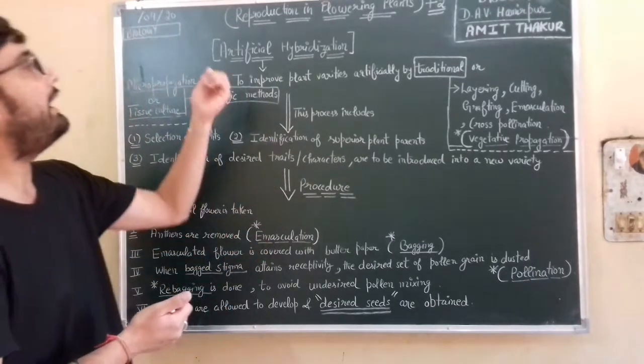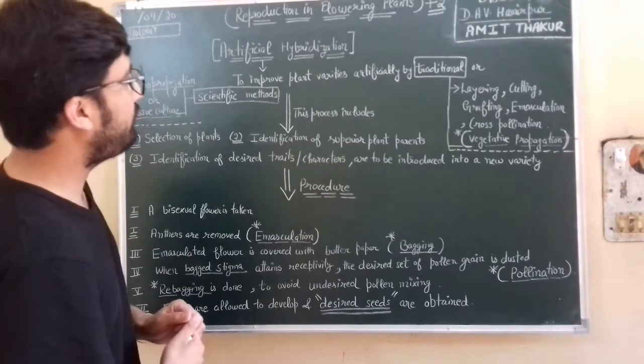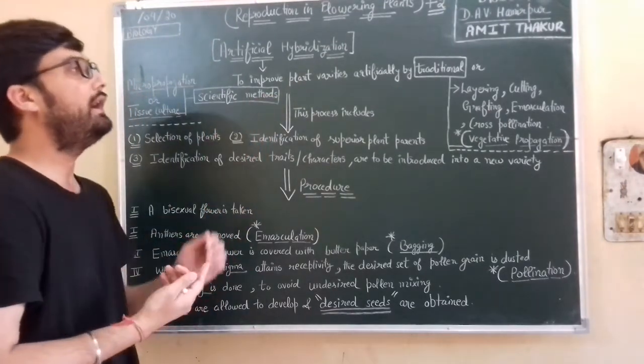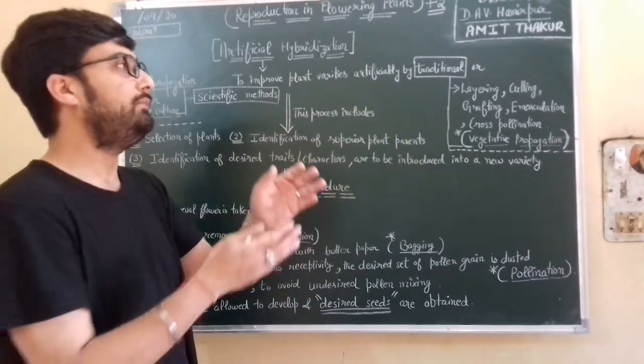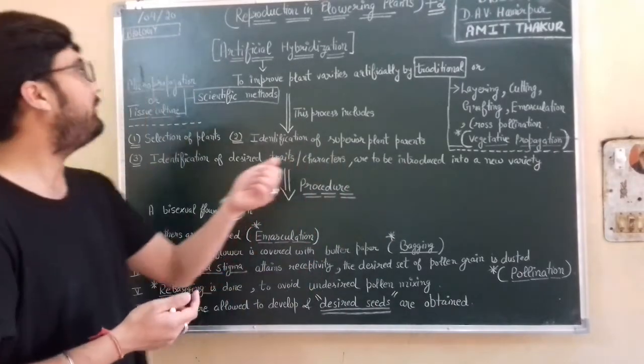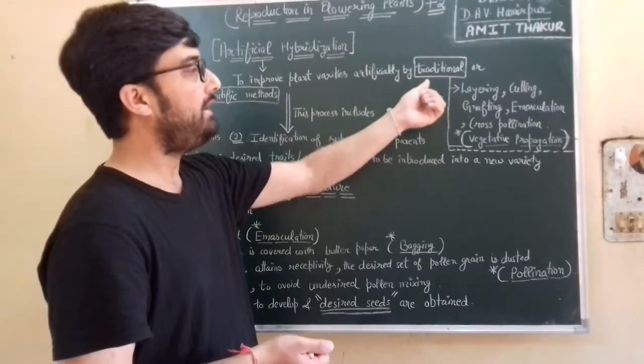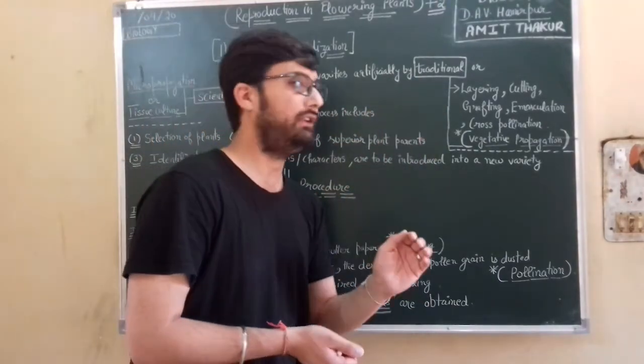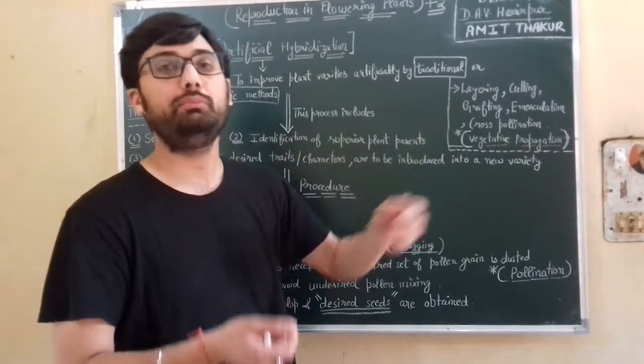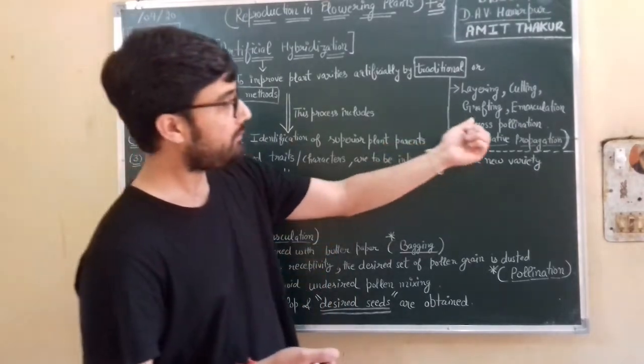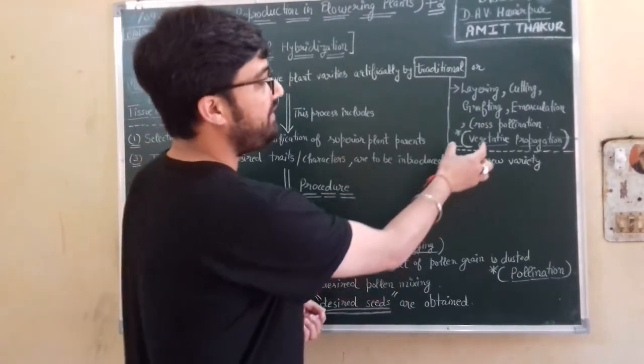So this is artificial hybridization and the motive of this process is to improve plant varieties artificially, or you can say by human efforts, either by traditional way or traditional methods or by scientific methods. When we talk of traditional methods, these methods include layering, grafting, cutting, emasculation means removal of anther, cross-pollination, and all of these are collectively known as vegetative propagation.